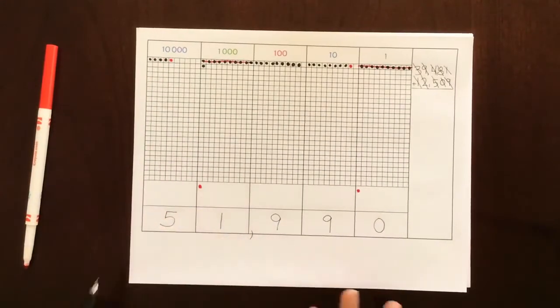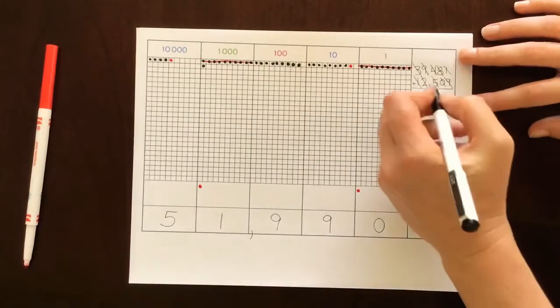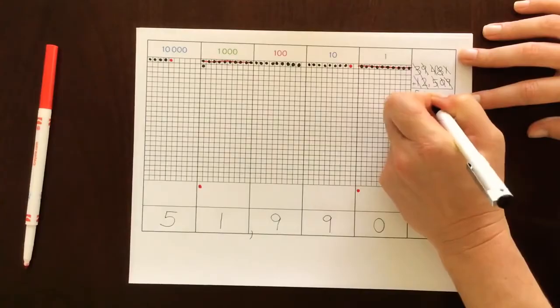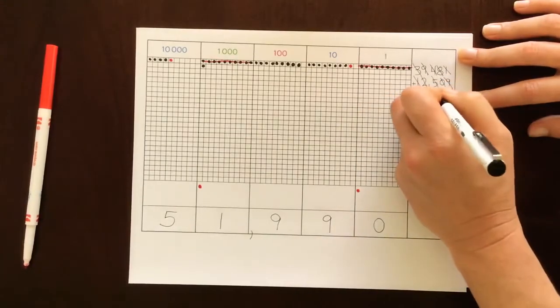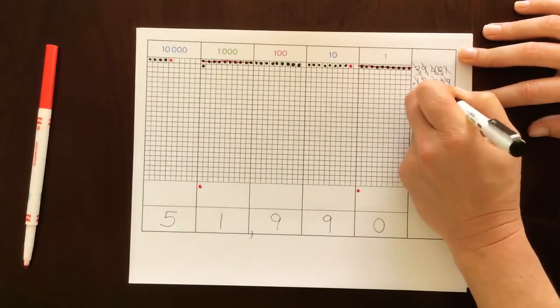And we can add a little comma there. So we have 51,990. And we can record that back here on our original problem: 51,990.